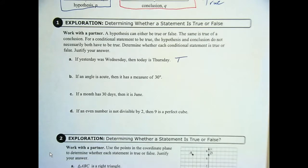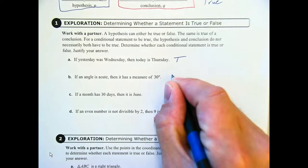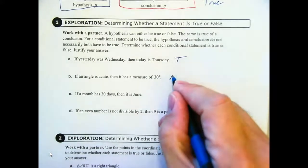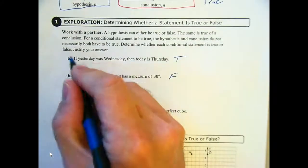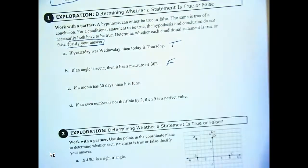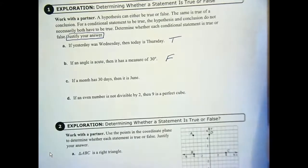Letter B: if an angle is acute, then its measure is 30 degrees. False — it doesn't have to be 30; it could be any angle measure less than 90. So that is false. You should justify your answer: any angle less than 90 degrees would work.